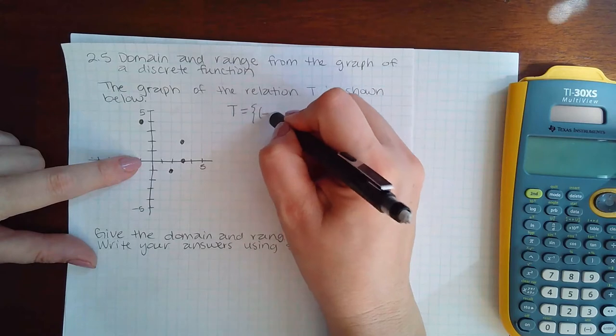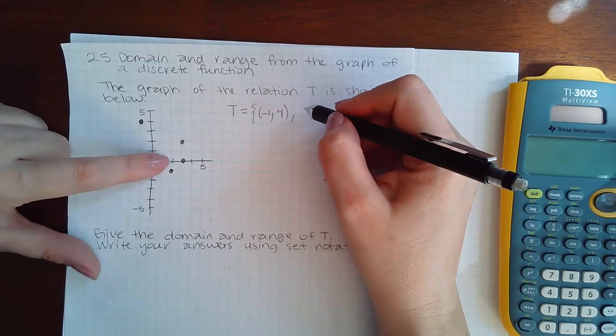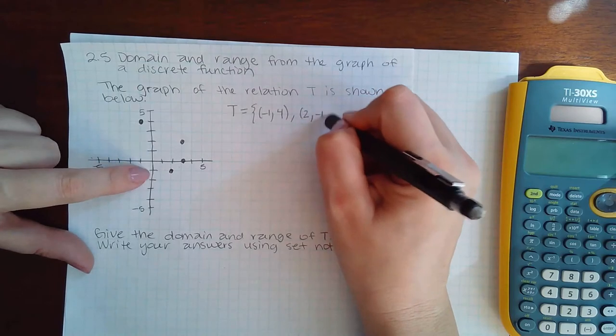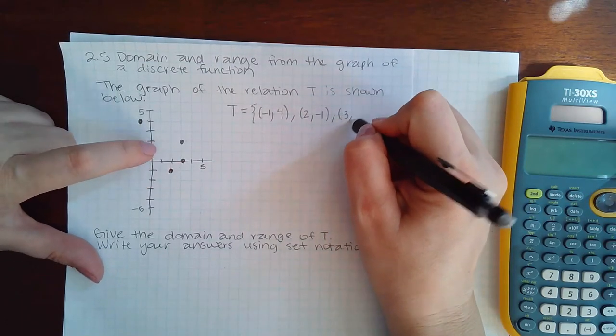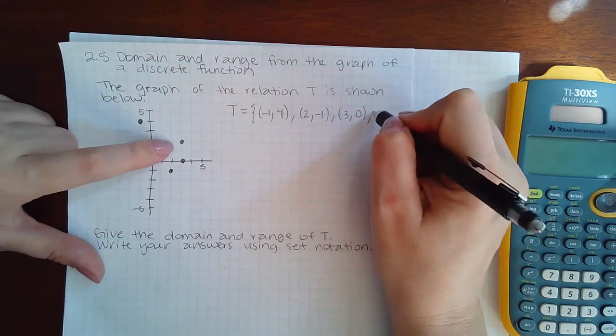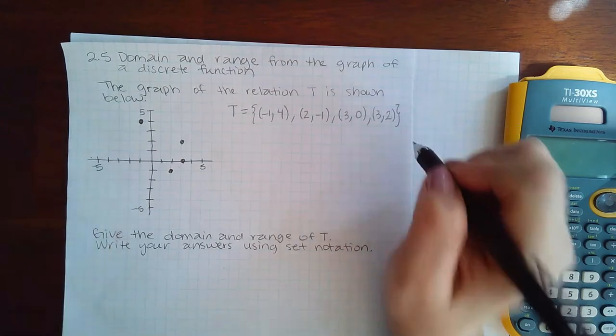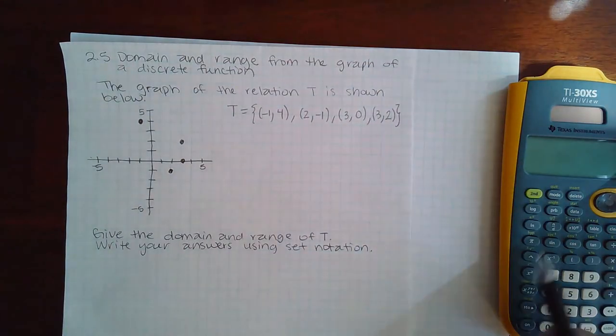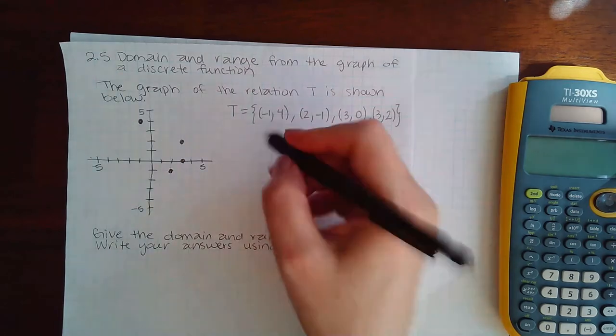this point which is (-1, 4), this point which is (2, -1), this point which is (3, 0), and this point which is (3, 2). So I basically turned it into the function so that it looks a lot like the function we'd already taken the domain and range of. And so then